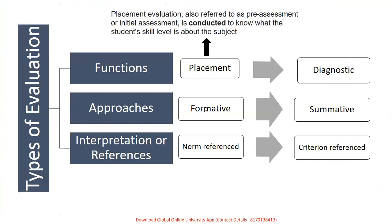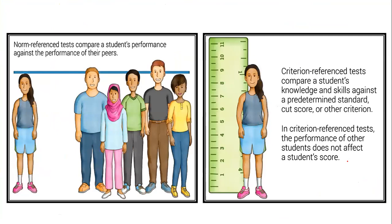Types of evaluation: placement evaluation is to understand what type of course is suitable for the student; diagnostic is to find out remedies; formative is continuous evaluation throughout the course; summative is done at the end. Norm-referenced evaluation compares one student with other students or classmates; criterion-referenced evaluation compares a student's knowledge and skills against a set standard — the performance of other students does not affect the student's score.